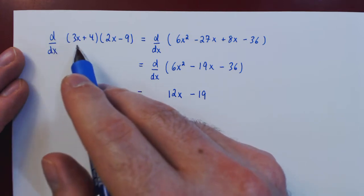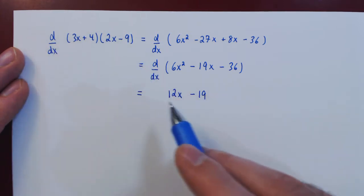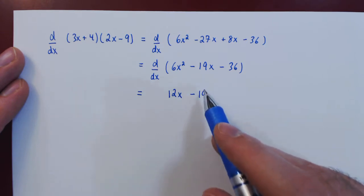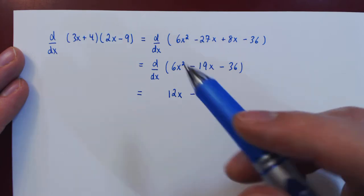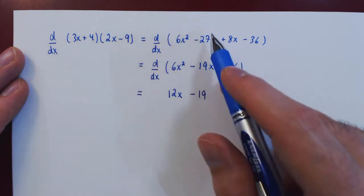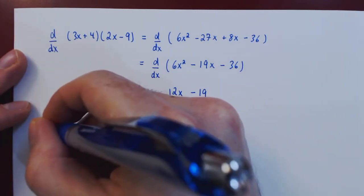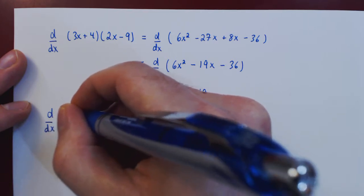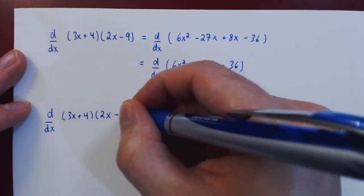The derivative of the product between 3x plus 4 and 2x minus 9 is 12x minus 19. Now let us give a second solution using the product rule instead of the expansion. So let's rewrite the original problem: the derivative of 3x plus 4 times 2x minus 9.